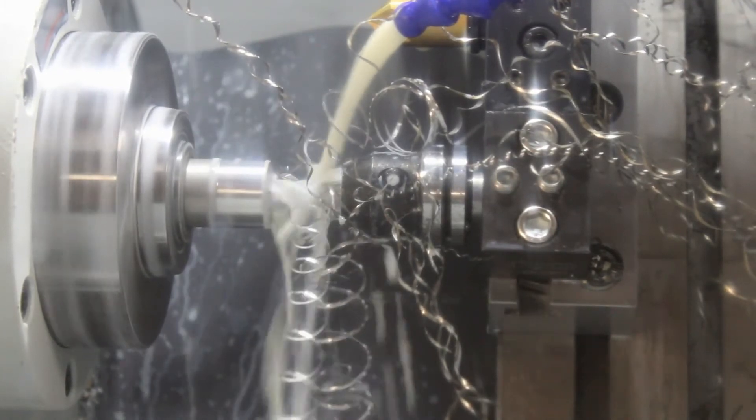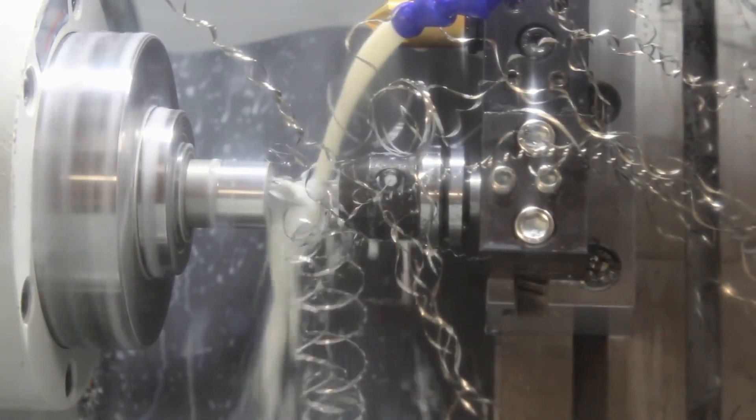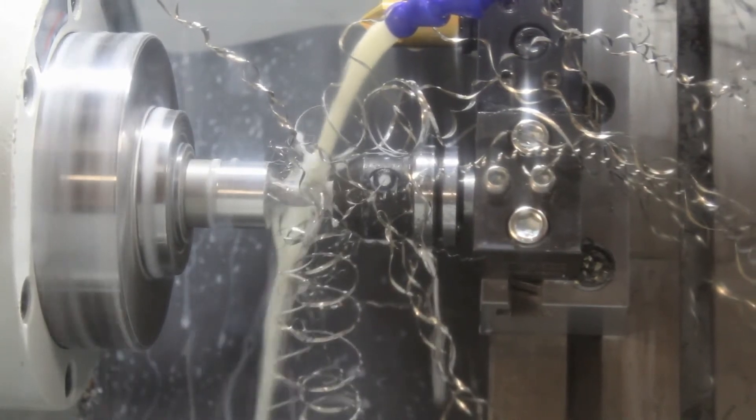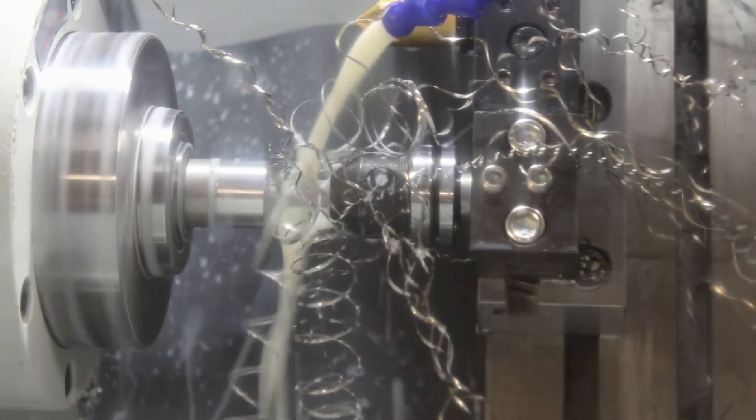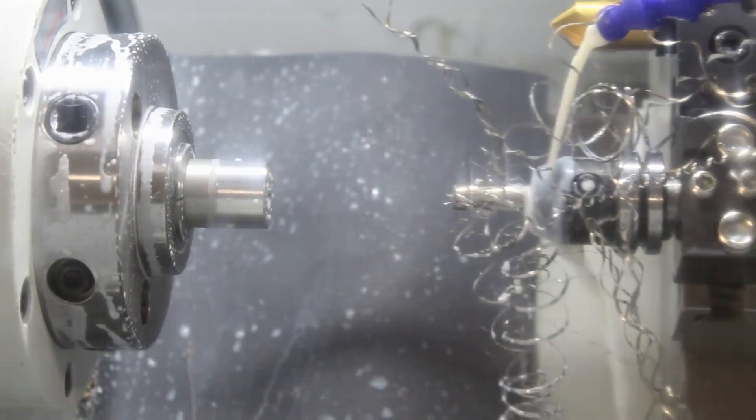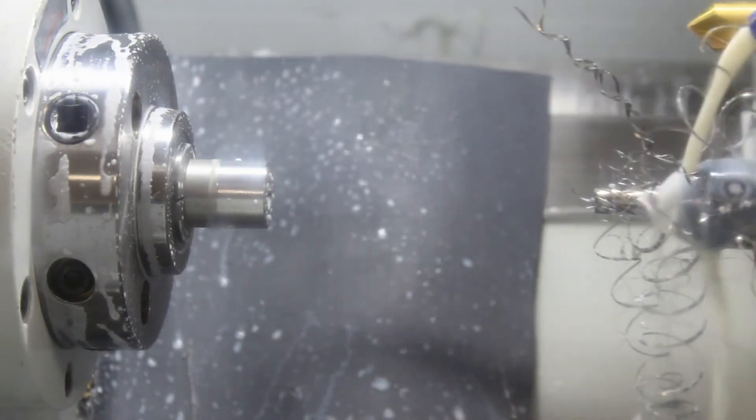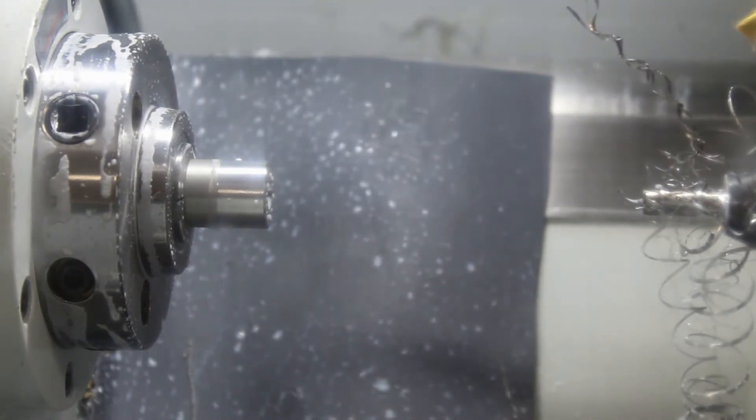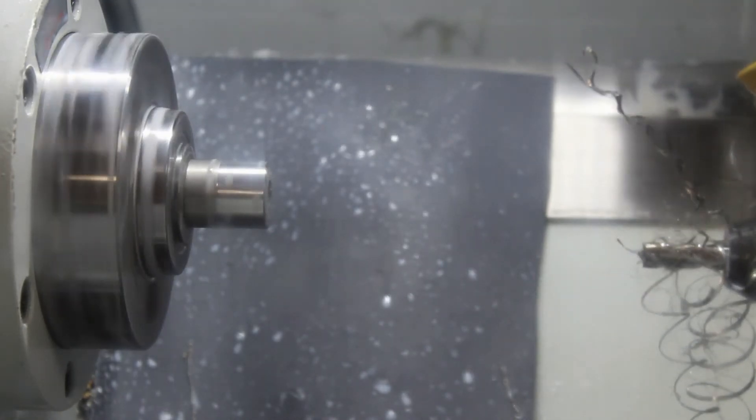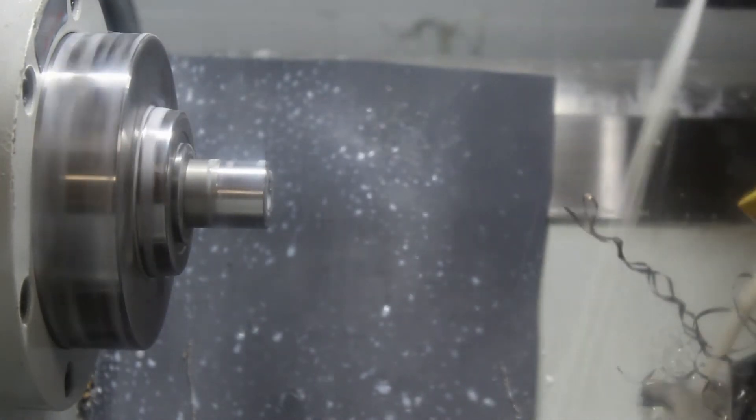This is just a high speed steel, 4 flute end mill. It sounds a little loud right now because it's not very sharp. This thing has been through, I think, almost 200 parts already. So it's actually held up a lot longer than I thought it would. This is 304 stainless like always.